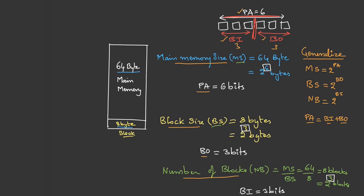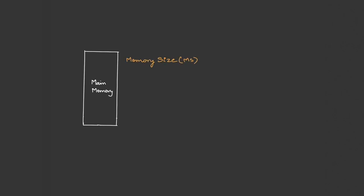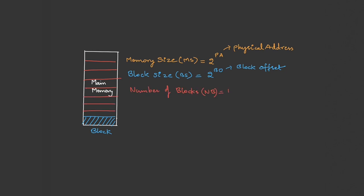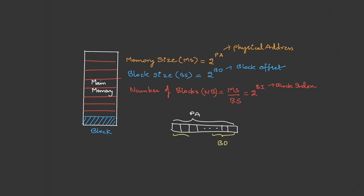These formulas are very important for GATE, so let's list them in a proper format. When we know the main memory size expressed as an exponent of 2, that exponent gives the physical address bits. If block size is also given and expressed as 2^n, then n is the block offset bits. The number of blocks equals memory size divided by block size, and expressed as 2^m, m gives the block index bits. In the physical address, the least significant bits are the block offset and the rest are the block index.